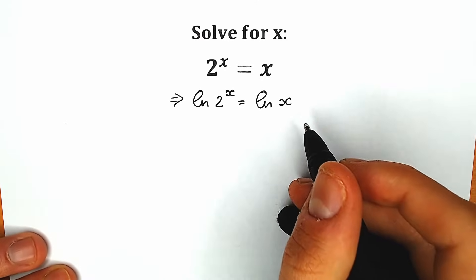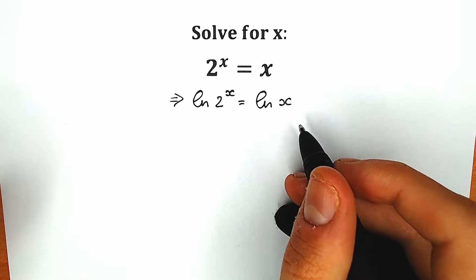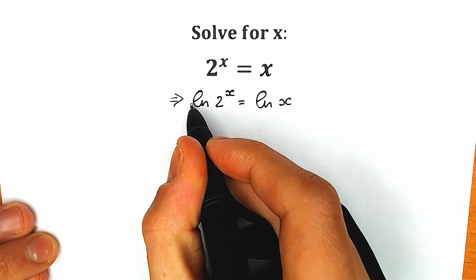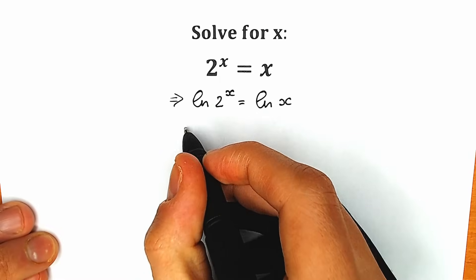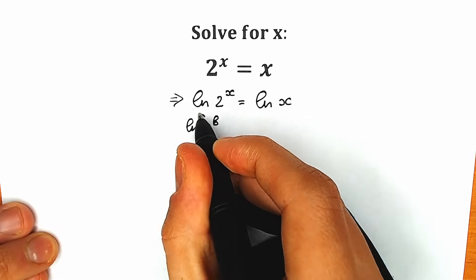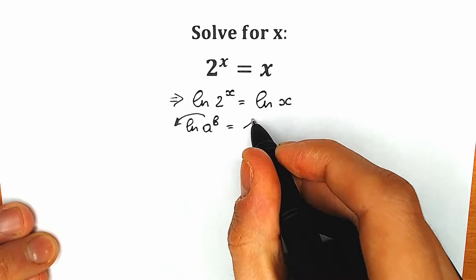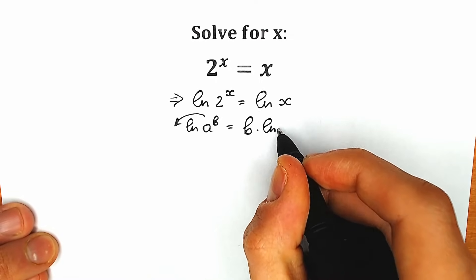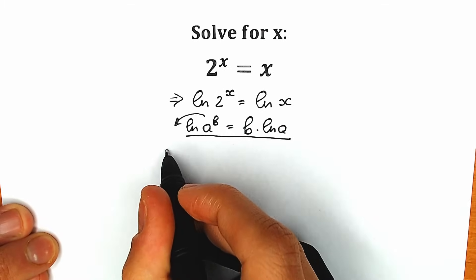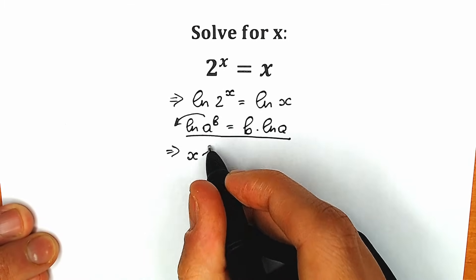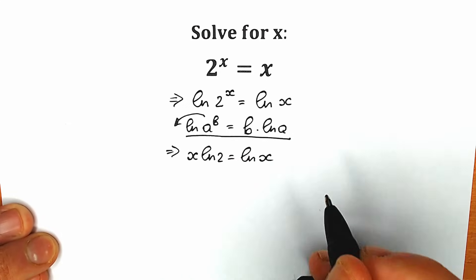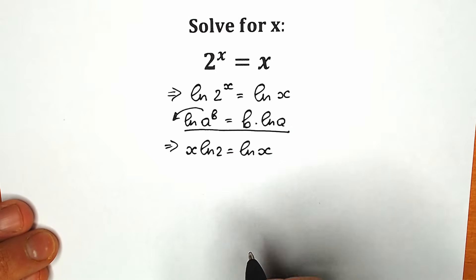Right now we need to know a really important property — this is the most popular log property. The x exponent will come down in front of the natural log. So when we have natural log of a to the power b, we can write it as b times natural log of a. Applying this, we get x times natural log 2 equal to natural log x.